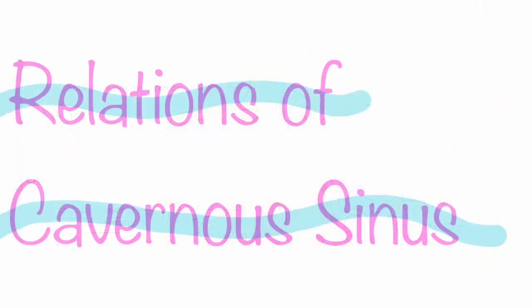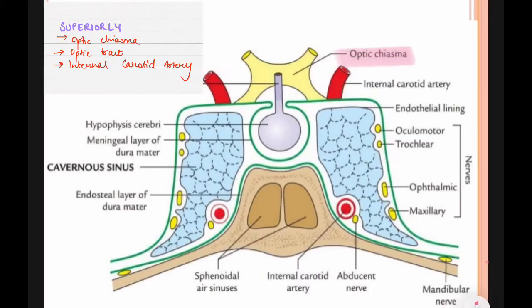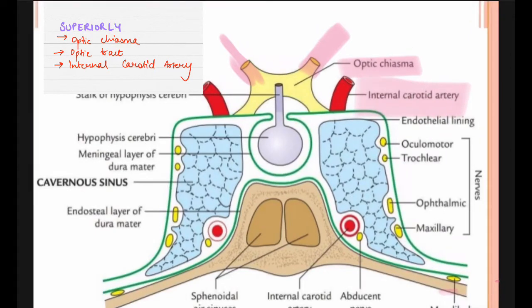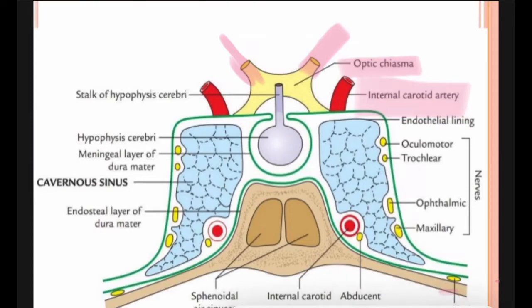Now coming to the relations of the cavernous sinus. The superior relations: number one is the optic chiasma, which is absolutely above it, then the optic tract and the internal carotid artery. These three are absolutely above the cavernous sinus.